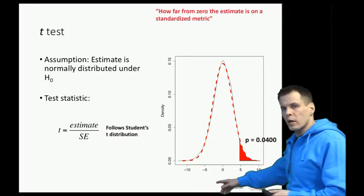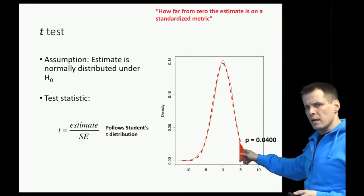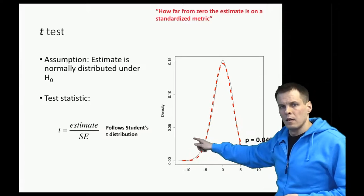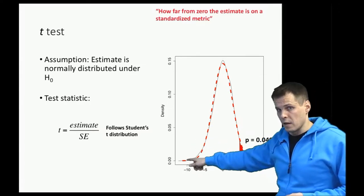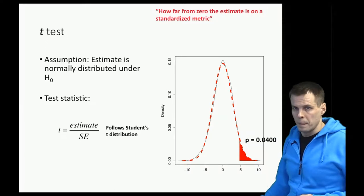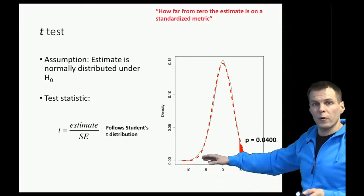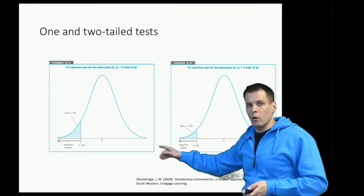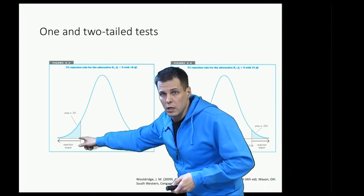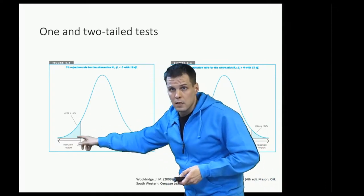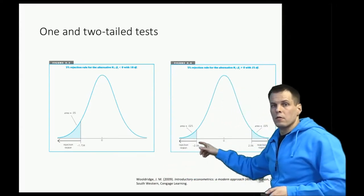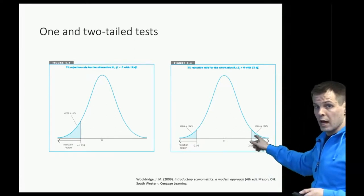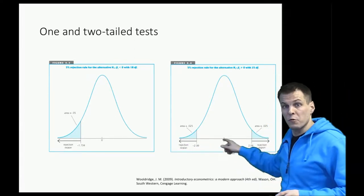In practice, it often makes sense to compare both areas, so we calculate this area as well. The logic being that it would be an important finding if the difference was in the other direction as well. This relates to one and two-tailed tests—what area we compare. Normally, if we only compare one end of the normal distribution here, this is called a one-tailed test. And if we compare the area—what is the 5% area here and here together, so this is 2.5% and this is 2.5%, they sum to 5%—then that's called a two-tailed test.